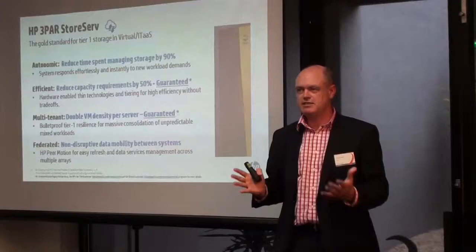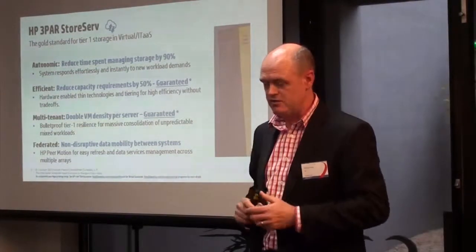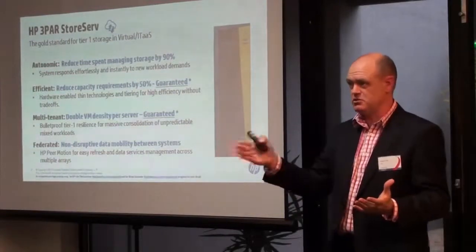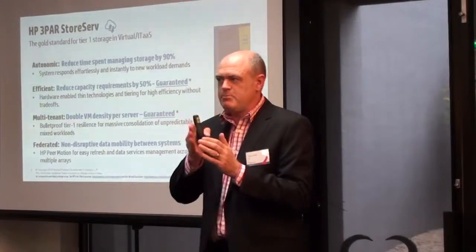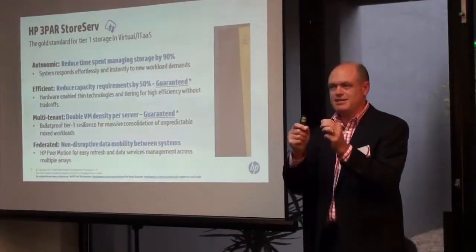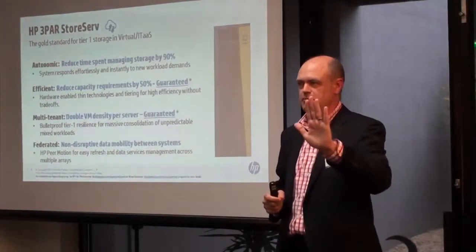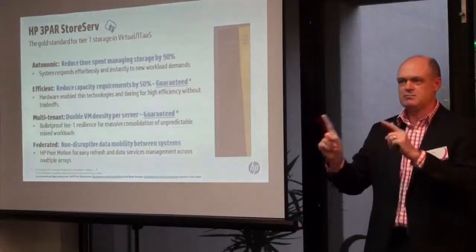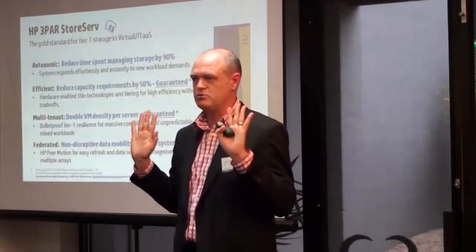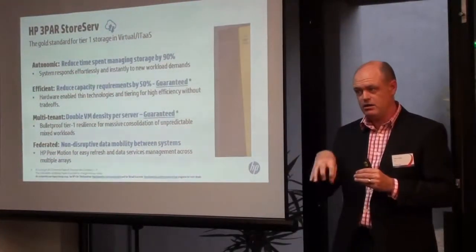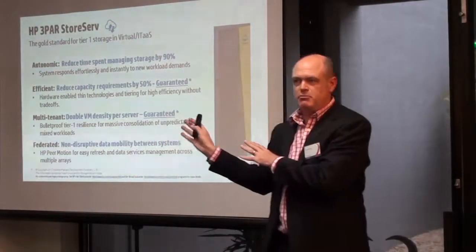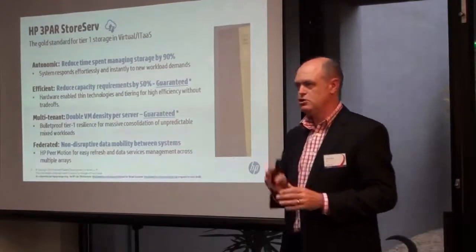And then there's multi-tenancy. Multi-tenancy means how can I take this big physical array and carve it up into virtual or private arrays for different applications, business units, or workloads? What happens when you do that is you get mixed workload contention — these VMs running 80% of my I/O, these VMs over here running nothing, maybe just test and dev. How do I make my array smart enough to balance all those different workloads without me having to program, tune, or manage it? That's exactly what the hardware inside 3PAR does.